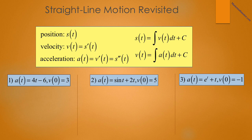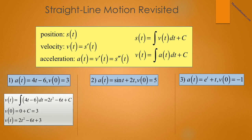In problems one through three, you are given the acceleration function a of t and a velocity at time zero, sometimes called the initial velocity, and you are asked to find the velocity function. In number one, you're told that a of t equals 4t minus 6, and v of 0 is equal to 3. So v of t is the integral of 4t minus 6 dt, which we know is 2t squared minus 6t plus c. We plug in the value of zero and get v of 0 equals 0 plus c, but that is equal to 3, making c equal to 3. Therefore, v of t is equal to 2t squared minus 6t plus 3.